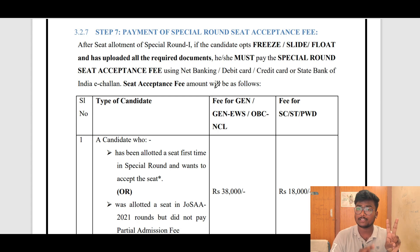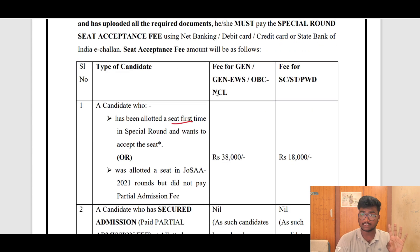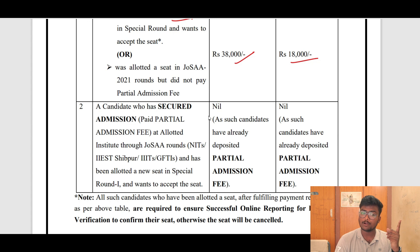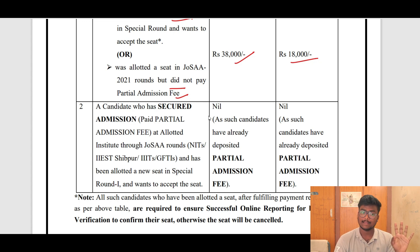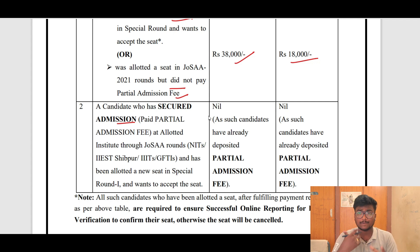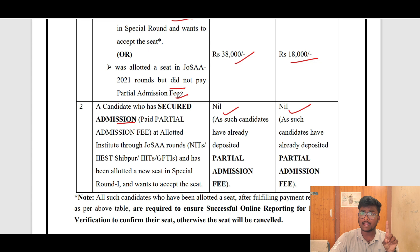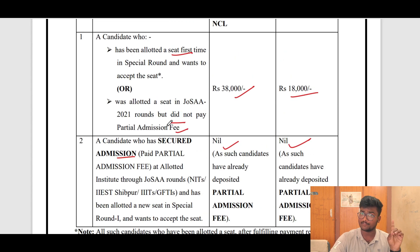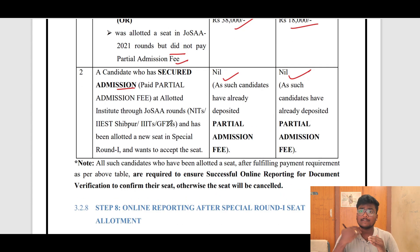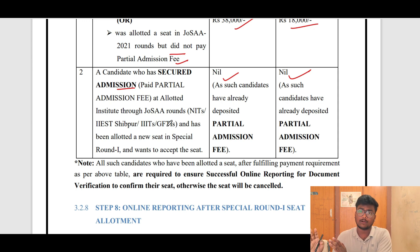Those who already paid the partial admission fee and seat acceptance fee during JOSA need not pay any amount if a new seat is allotted to them in CSAB. For candidates allotted a seat for the first time, General, EWS, OBC should pay 38,000, and SC, ST should pay 18,000. Candidates allotted a seat in JOSA 2021 but who only paid seat acceptance fee and not partial admission fee — they also pay 38,000 or 18,000 respectively. Candidates who secured full admission in JOSA and participated in CSAB need not pay any amount — nil. All amounts paid will be transferred to whichever college you are finally admitted to.